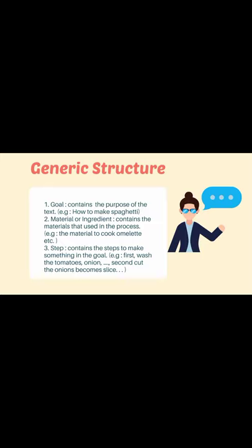And then the second one, the material or the ingredient — usually for the cooking procedure — contains the materials that are used in the process, for example, the materials to cook omelette and so on. The third one, the step, contains the steps to make something in the goal — first, wash the tomatoes, onions, and so on. That's the generic structure of the procedure text.